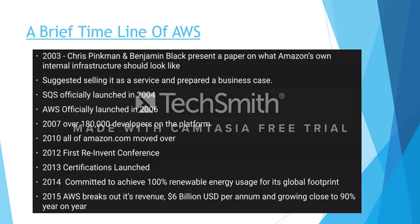In 2012, AWS held their first re:Invent conference in Las Vegas, where they invite customers to learn about new launches and services — an event that now happens every year. In 2013, they launched their certification program, similar to Microsoft, Cisco, and other vendors who certify knowledge on their platforms. In 2014, they committed to achieving 100% renewable energy usage for their global footprint. By 2015, AWS broke out its revenue at $6 billion USD per annum, growing close to 90% year on year.